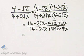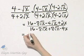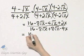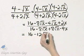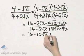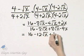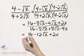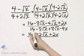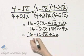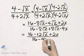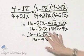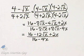Now let's simplify by combining any like terms. I have 16 minus 12 square root of x plus 2x in the numerator. In the denominator, notice I have 16 minus 4x. The middle terms subtract out.